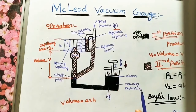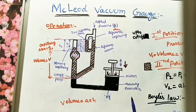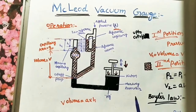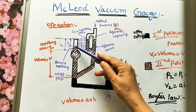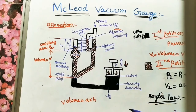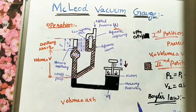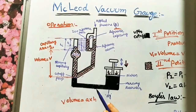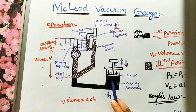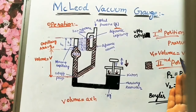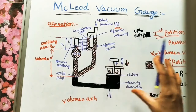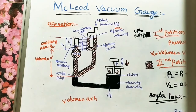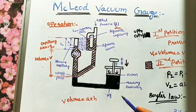Applications of McLeod vacuum gauges: we can apply them for finding vacuum pressure. The advantages are: whatever gas we supply, it gives accurate values, so it is independent of gas composition. It also serves as a reference standard to calibrate other low pressure gauges. We can check if other pressure gauges are working properly by comparing their readings to P1 or P2 values from this gauge. It is thus a standard gauge.